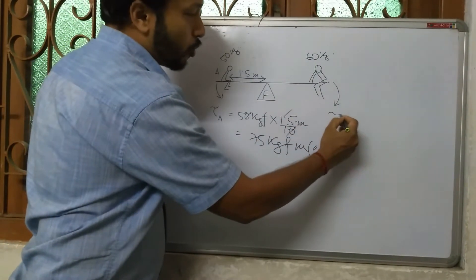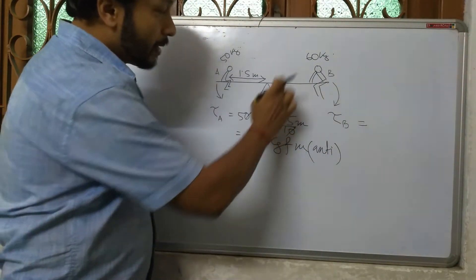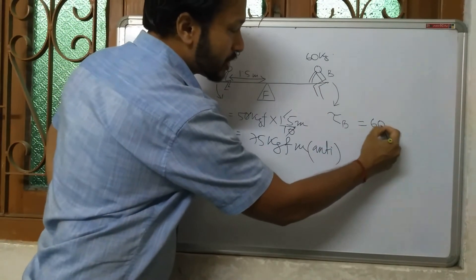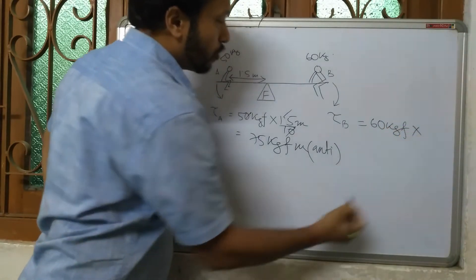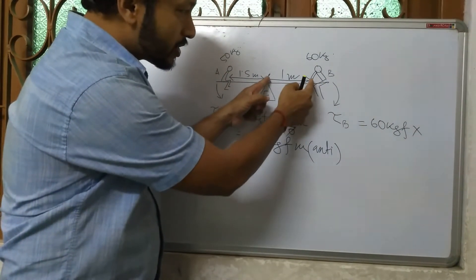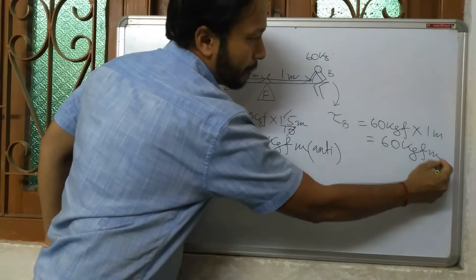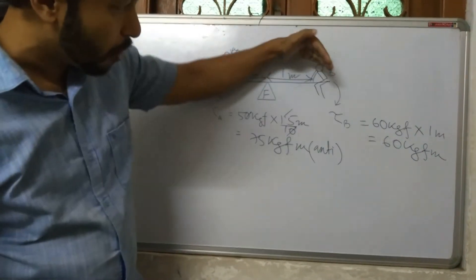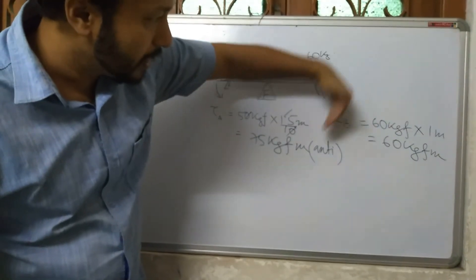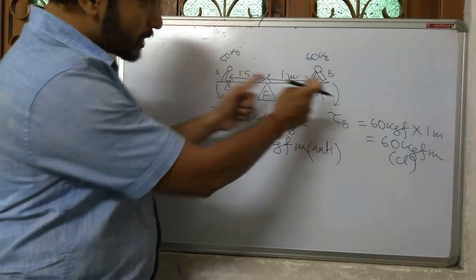Now for boy B, his mass is 60 kg, so his weight is 60 kgf. His distance from the fulcrum is 1 meter. So torque for B = 60 kgf × 1 m = 60 kgf·m. Since for this boy the seesaw tilts in the clockwise direction, this is the clockwise torque.